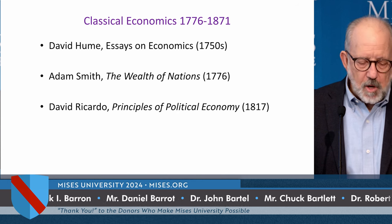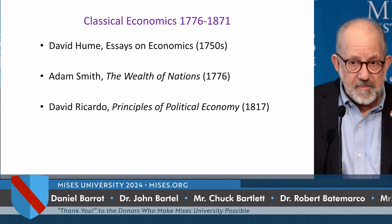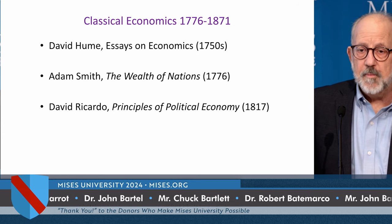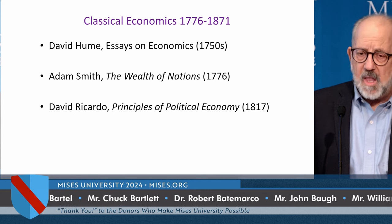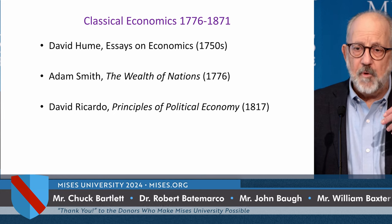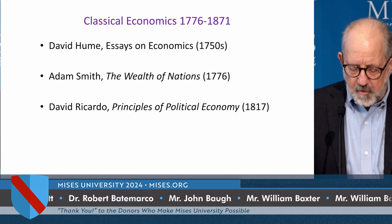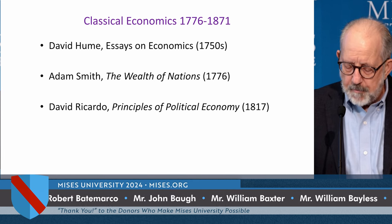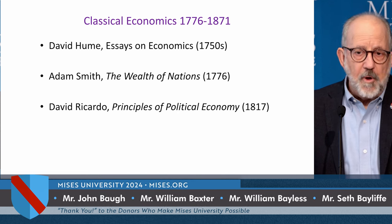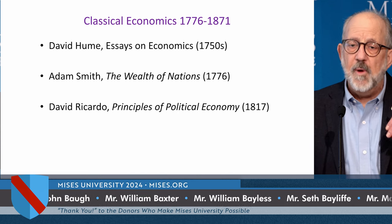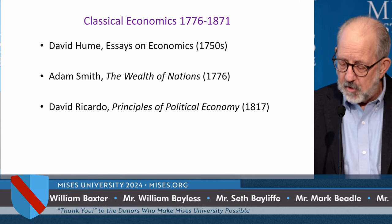Before Menger wrote, the dominant school of economics — though not the only one — was the British Classical School. Three very prominent names associated with it are David Hume, Adam Smith, and David Ricardo. They dominated economics for 100 years — from when Smith wrote his book in 1776 to 1871, when the Marginalist Revolution took place.